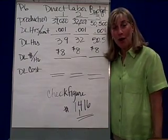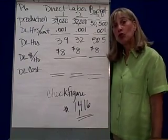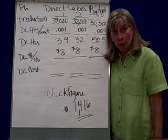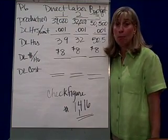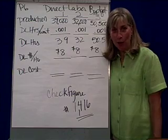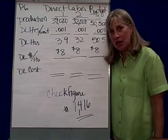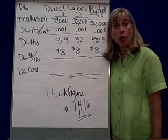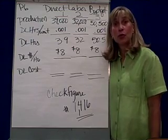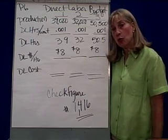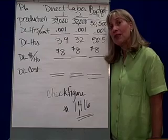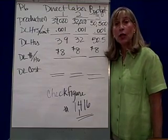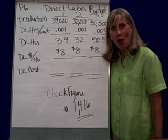Managerial accounting, the budgeting process. We're doing problem P6. So far, we've done the sales budget, where we figured out how many bottles of water we're going to sell. Then we did the production budget, which determined how many bottles of water we needed to produce each quarter. Then we looked at the ingredients or the inputs, and we've done the material purchases budget for water.